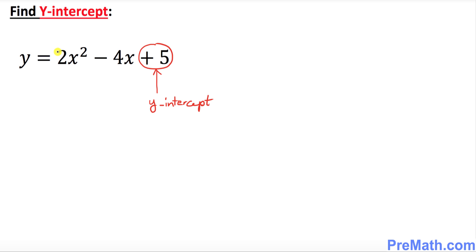Finally, our y-intercept is going to be simply the constant value, which is our c. That means our y-intercept turns out to be simply positive 5.